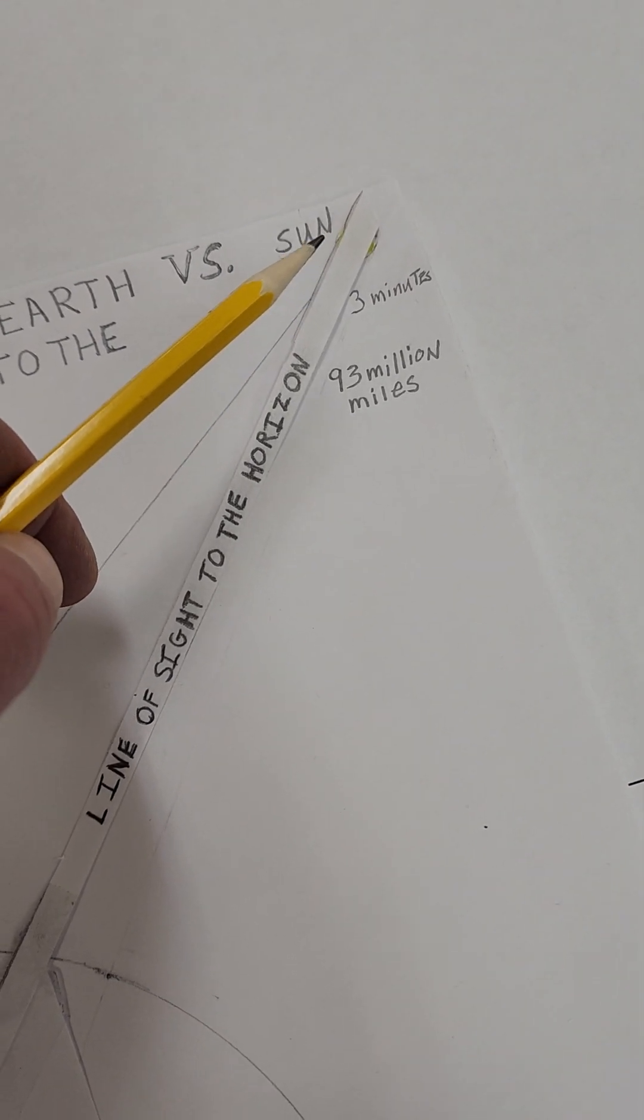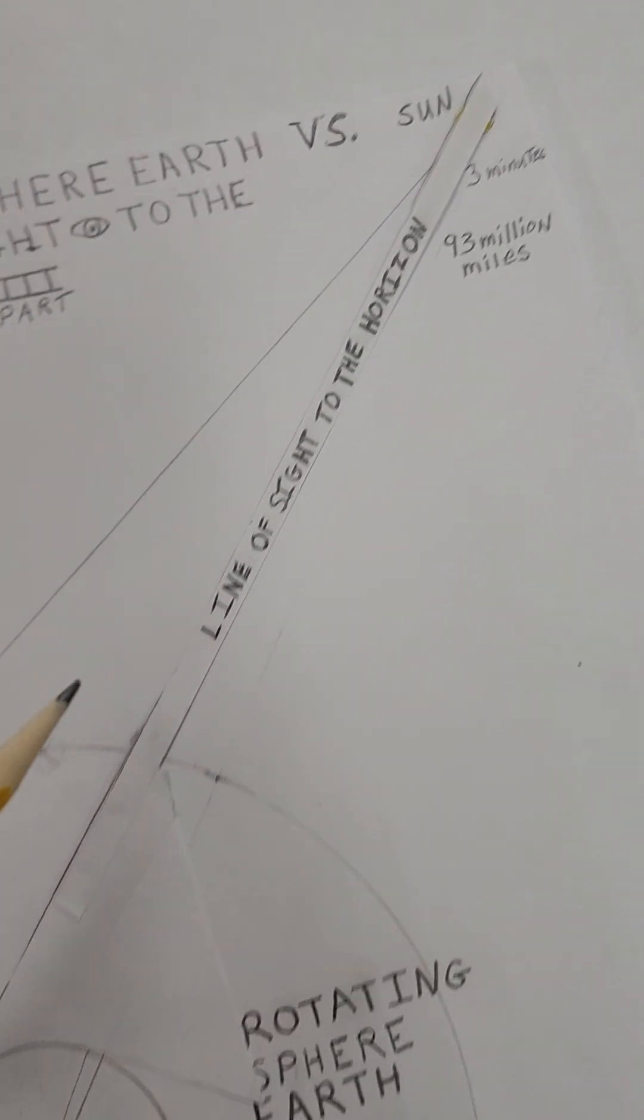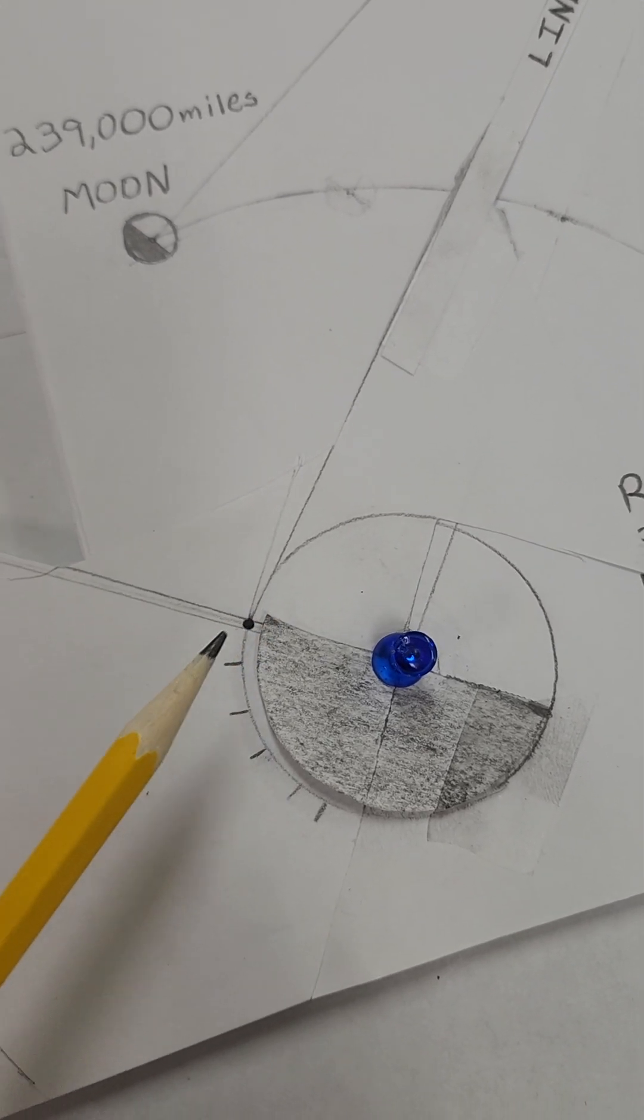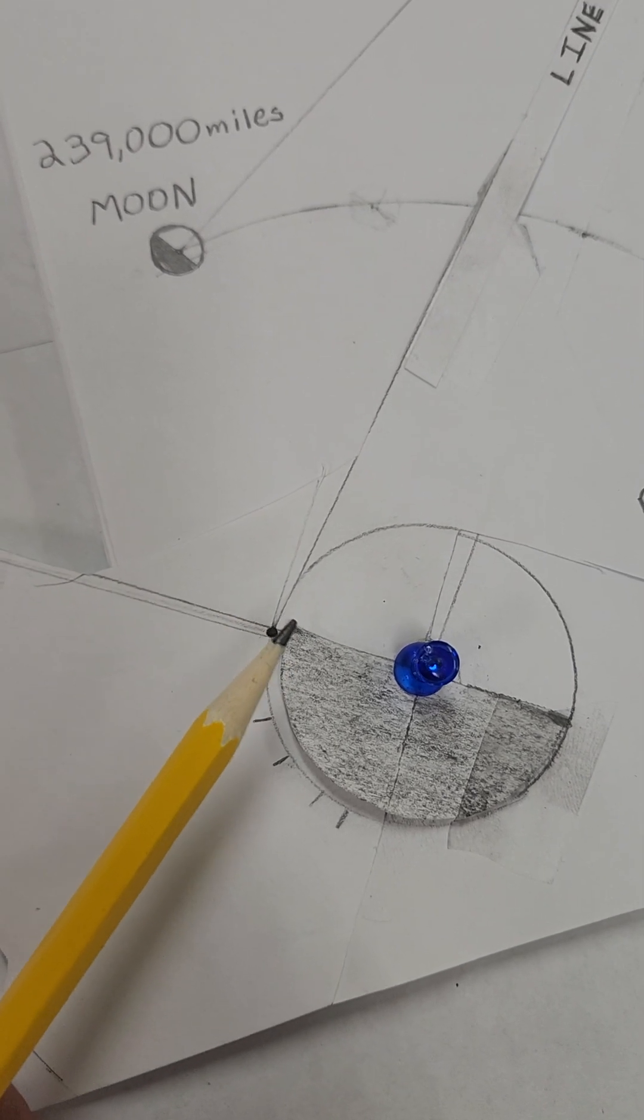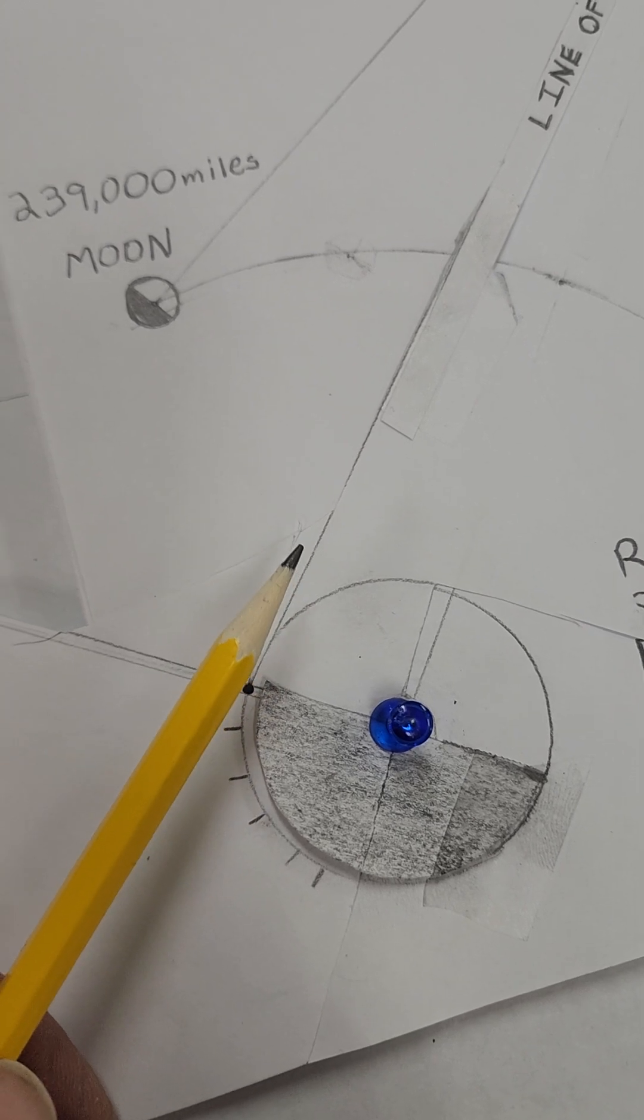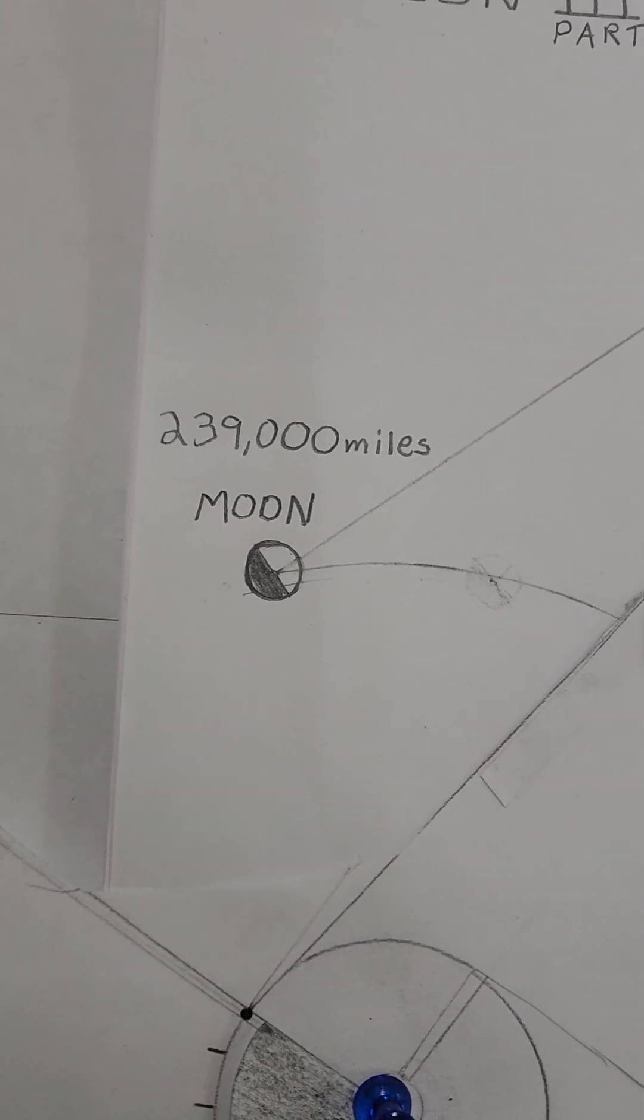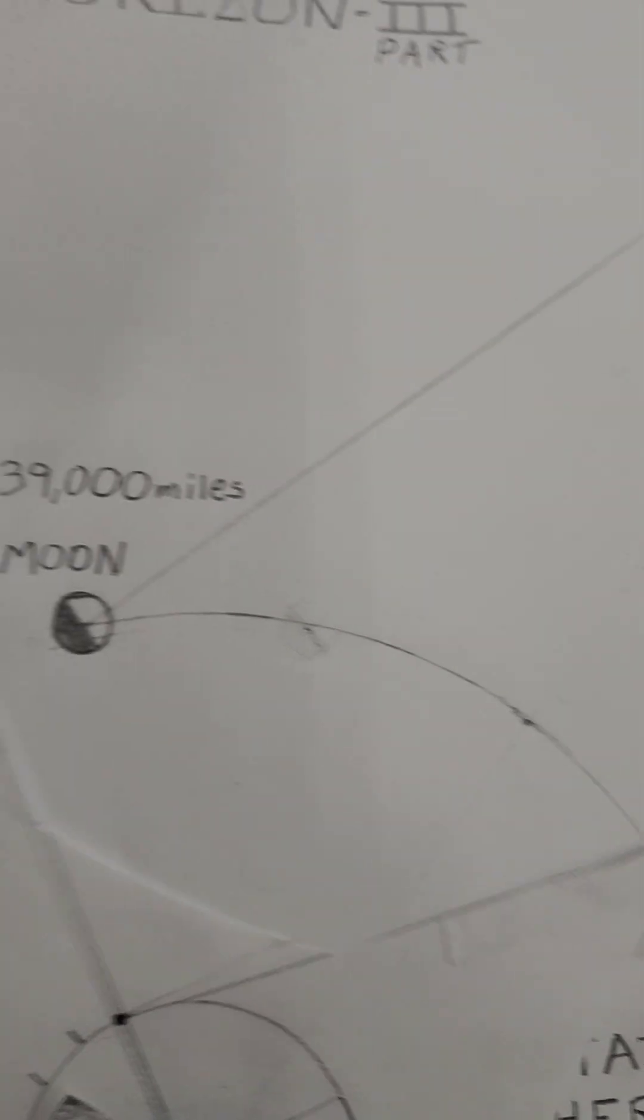You can't see the sun anymore. You might see a little glow, but you can't see the sun. And the reason why you can't see the sun is because your line of sight now is below this line of sight, and the earth is blocking your line of sight to the sun. Now, over here, I want to show you, let's back this up.